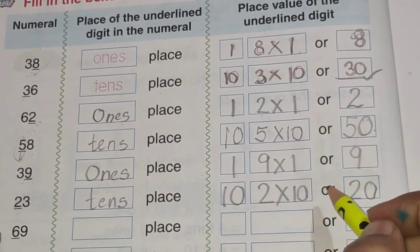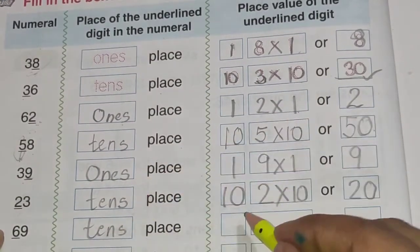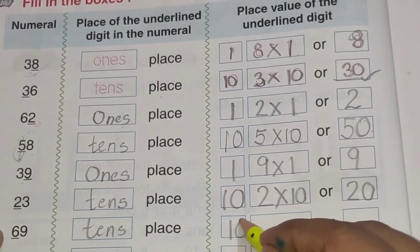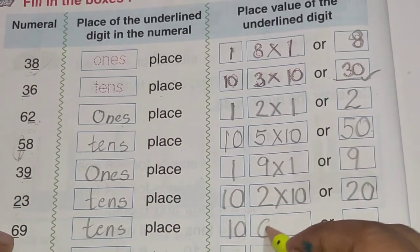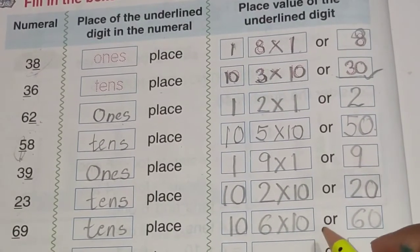This is 69. 6 hai tens place pe. So we will write T, E, N, S. Tens. And tens ki value hoti hai 10. This is 6. 6 into 10. It is equal to 60.